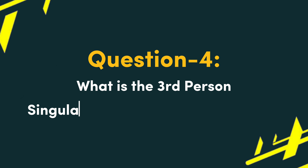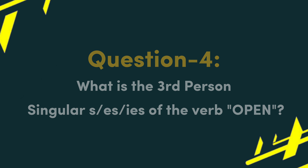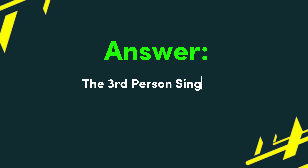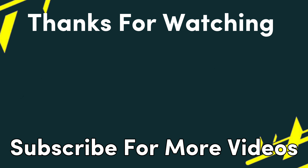Question 4: What is the third person singular s/es/ies of the verb open? Answer: The third person singular s/es/ies of the verb open is opens. The base form of the verb open is open.